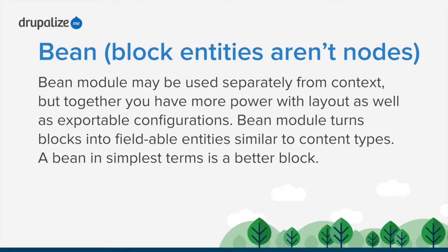The Bean module - why is it called Bean? Because it stands for Block Entities Aren't Nodes. We use the Bean module to turn blocks into entities. The Bean module may be used separately from Context, but together you have more power with layout as well as exportable configuration. Bean module turns blocks into fieldable entities, similar to content types. In simplest terms, Bean is a better block. By making a block an entity, you get all the advantages of an entity itself - fields, managing those fields, managing displays.